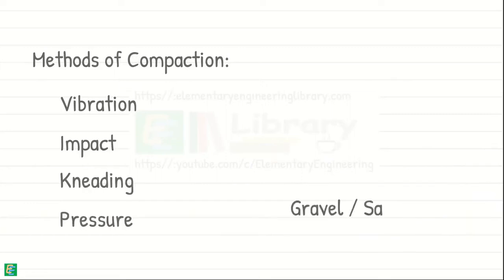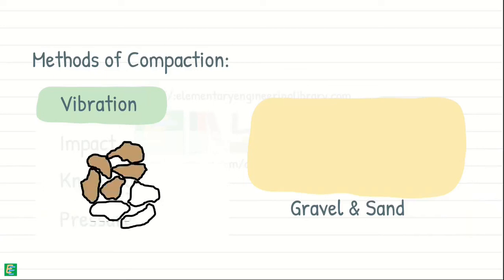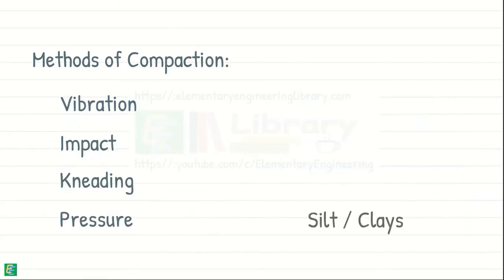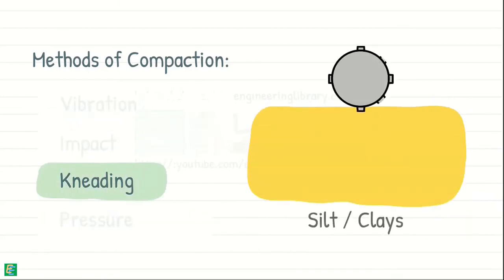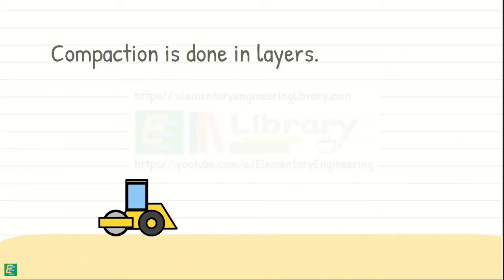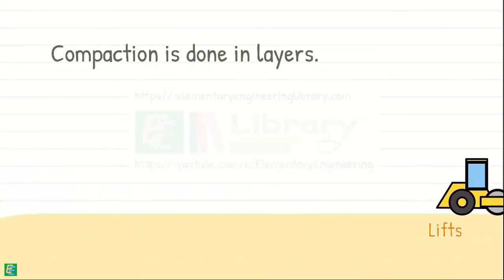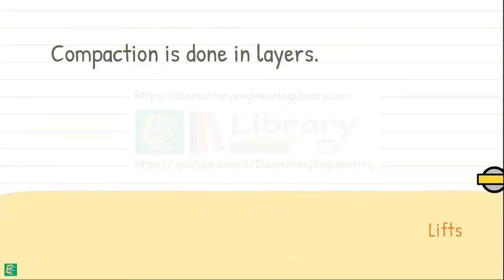In gravel and sand type of soils, we usually choose vibrational equipment to cause a reorientation of the soil particles into a denser configuration. While in silt and clay soils, a sheepsfoot roller is frequently used to create small zones of intense shearing to bring air out of the soil. The compaction is usually done in layers, which are sometimes also called lifts. Each layer is compacted before the next one is added.